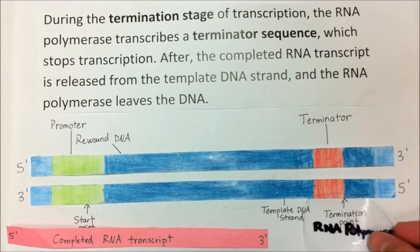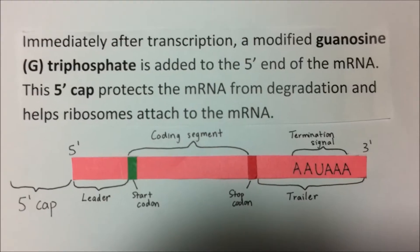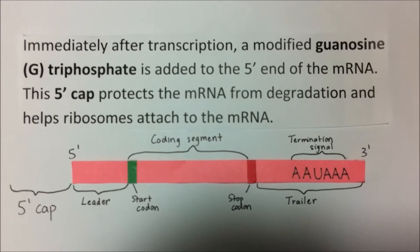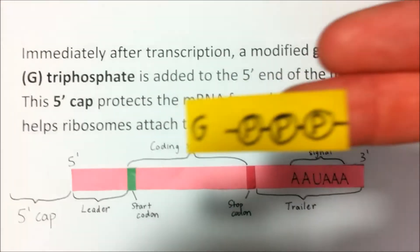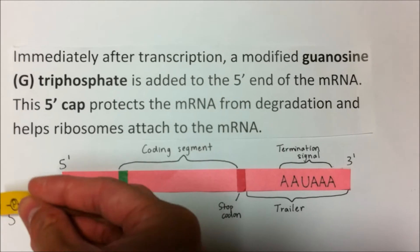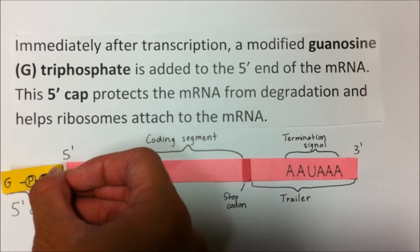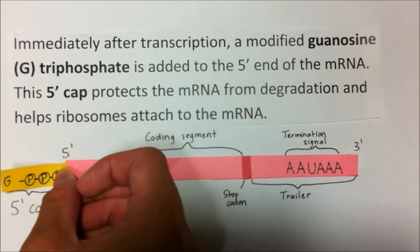After transcription is RNA processing. Immediately after transcription, a modified guanosine triphosphate is added to the 5' end of the mRNA. This 5' cap protects the mRNA from degradation and helps ribosomes attach to the mRNA.